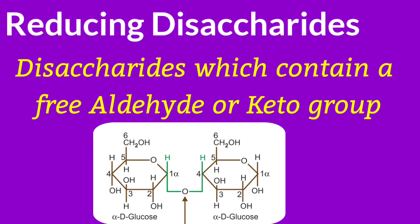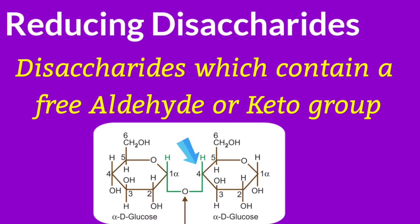Here you can see the structure of maltose. Maltose is made up of two glucose units joined by a 1→4 glycosidic linkage, meaning the first carbon of the left glucose forms a bond with the fourth carbon of the second glucose. Maltose has two functional groups — one on each glucose — and one of these aldehyde groups is involved in forming the glycosidic bond.